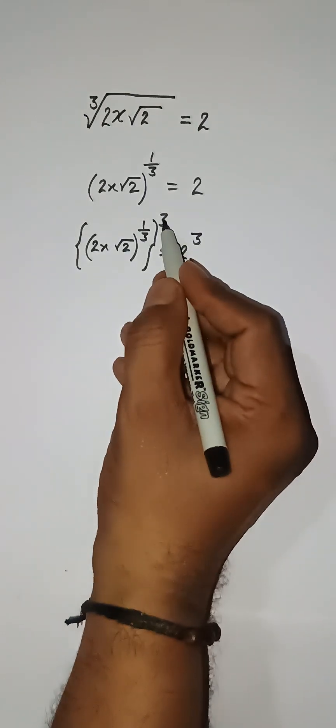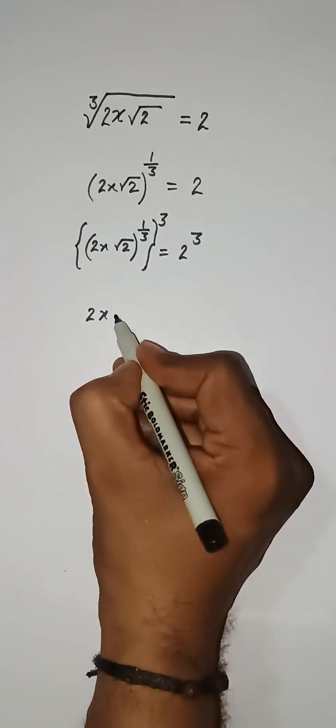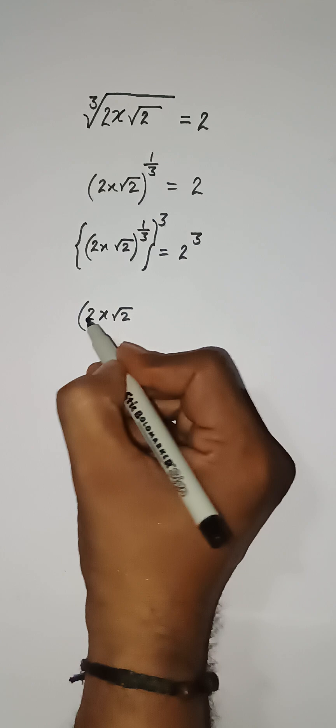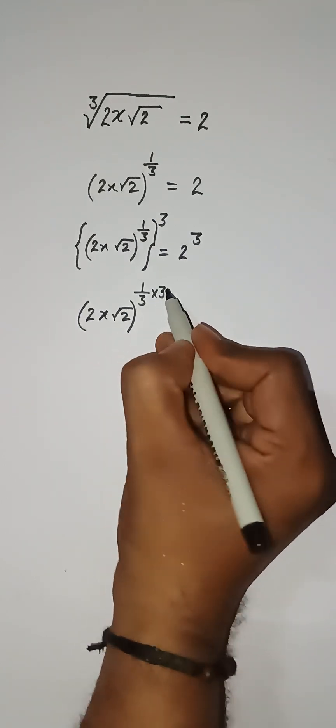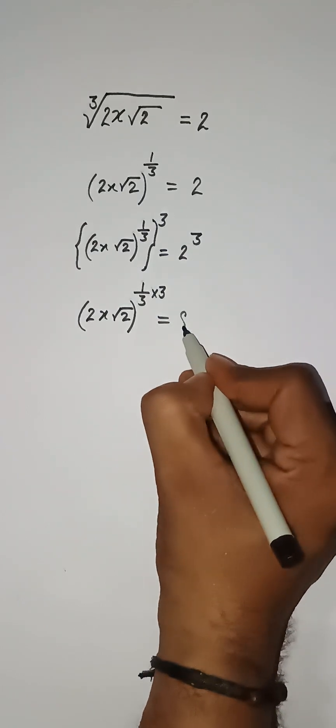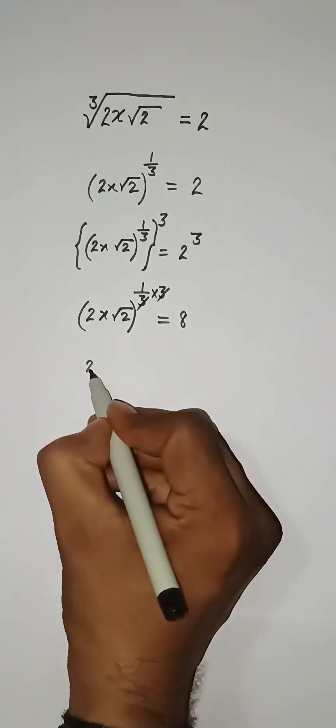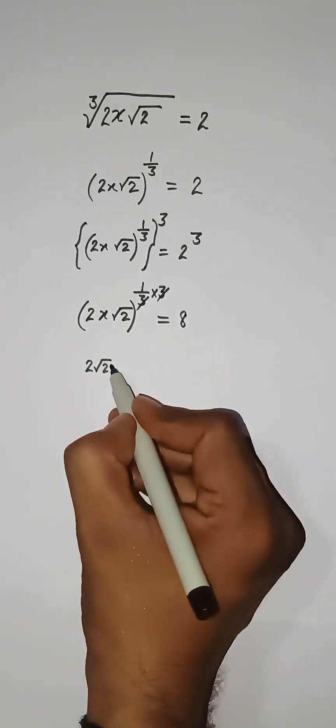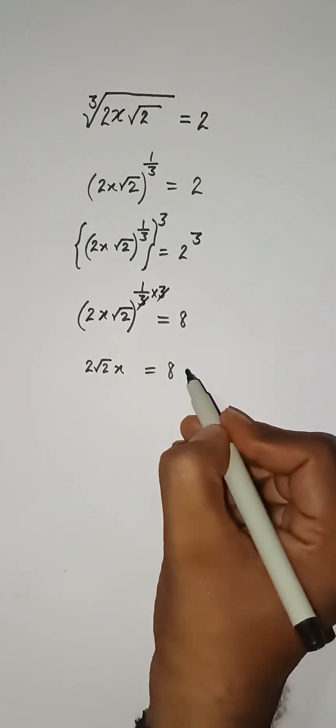So this power 1 by 3 and this 3 will be canceling each other. So here we have 2x root under 2. The 1 upon 3 multiplies with 3. Then 2 to the power 3 is 8. This 3, this 3 will cancel. So we have 2 root under 2 and x is there. Then we have 8.